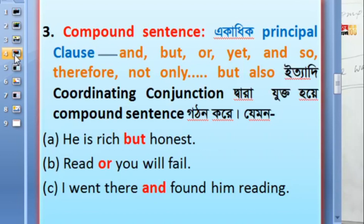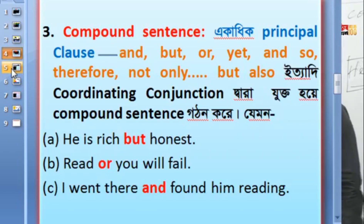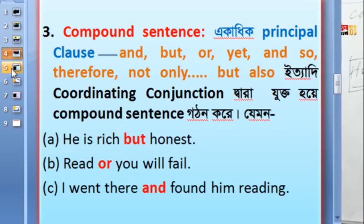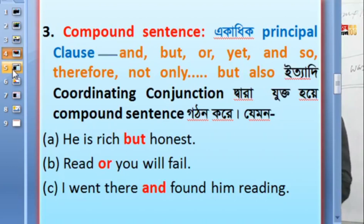For a compound sentence, you can add more than one principal clause — all clauses are principal and no clause depends on any other. You make a compound sentence by using coordinating conjunctions like: and, but, or, yet, so, therefore, not only...but also. In this way you can make compound sentences.